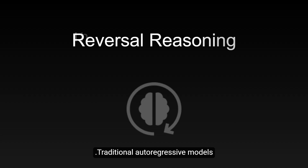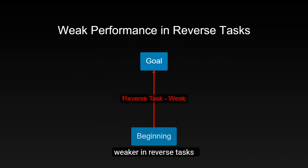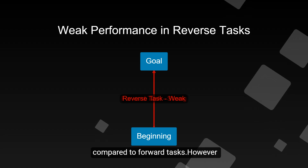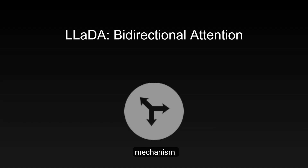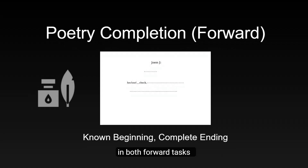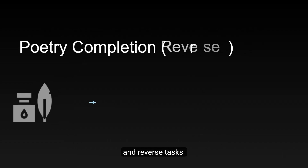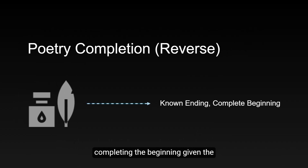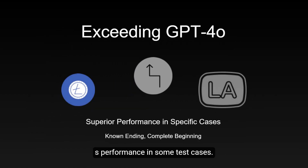Traditional autoregressive models often face the 'reversal curse' problem, meaning they perform significantly weaker in reverse tasks — like deriving a process from results — compared to forward tasks. However, LIDA, through its bidirectional attention mechanism, achieves consistently high performance in both forward tasks (completing the end given the beginning of a poem) and reverse tasks (completing the beginning given the end of a poem), even surpassing GPT-4's performance in some test cases.